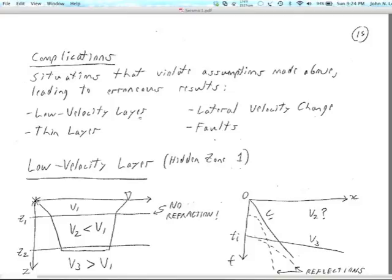The hidden layers are: hidden zone type 1 is a low velocity layer, and hidden zone type 2 is a thin layer, a layer that's too thin to produce a noticeable refraction. There's also structural complications: there can be changes in velocity laterally, and there can also be faults and offsets, non-planar lateral changes in our refractor structure.